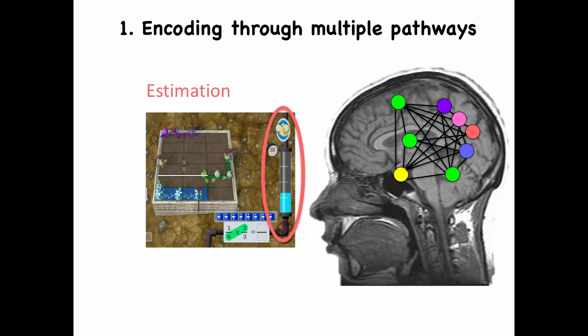We also engage students in estimation involving math concepts to increase cortical connectivity with specific regions in the brain involved in estimation and number sense. And of course, both symbolic numerals and non-symbolic representations of quantity are presented simultaneously to establish a more comprehensive network in the brain.